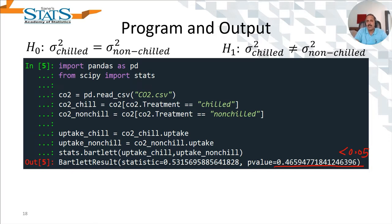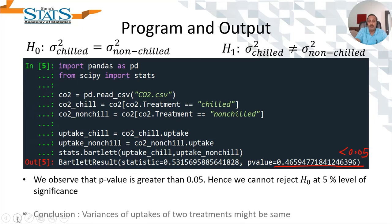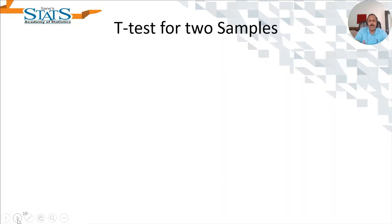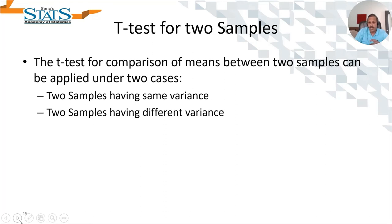A p-value greater than 0.05 would indicate we are not rejecting the null hypothesis, meaning variances may be equal. Now, why did we test for variances before testing for means? Because the t-test for means has two types: one assuming equality of variances, and another assuming inequality of variances. We first need to test whether the variances are equal in both samples, and once we determine that, we apply the appropriate test.